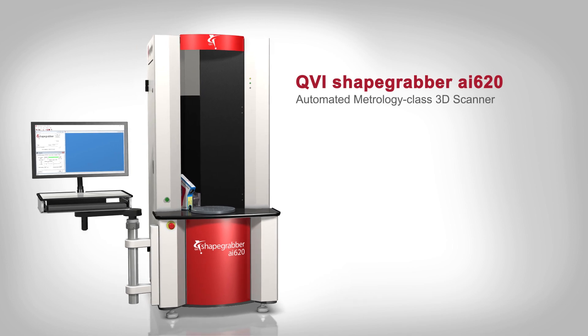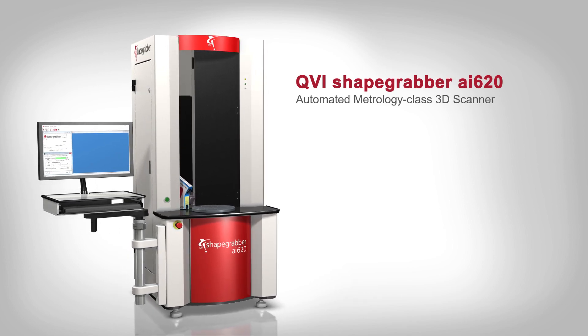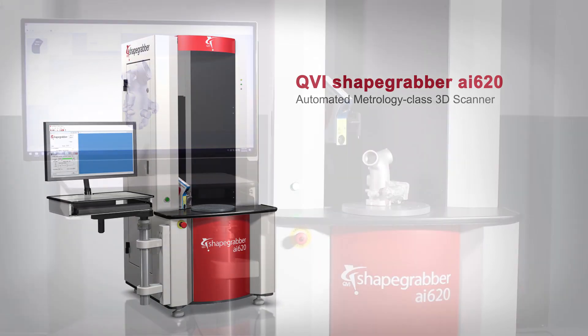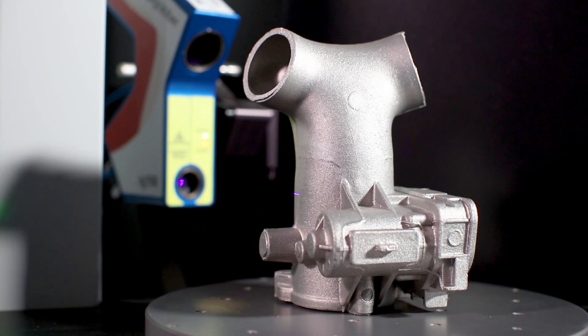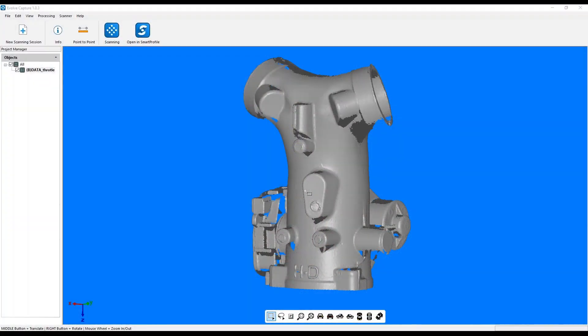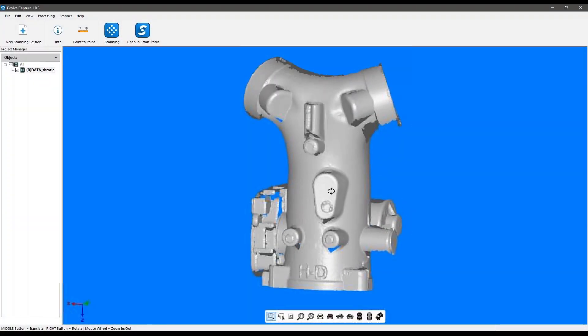QVI ShapeGrabber AI620 is an automated metrology class 3D scanner. The AI620 features a precision rotary table and high-accuracy scan head designed to fully measure complex shaped parts quickly and easily.